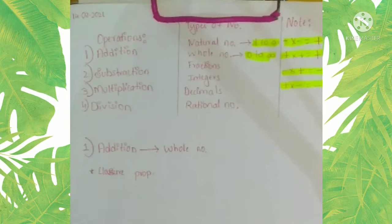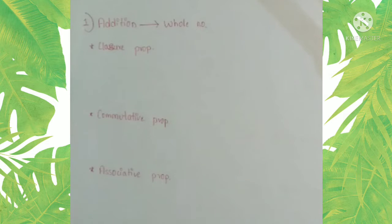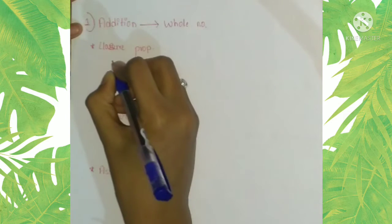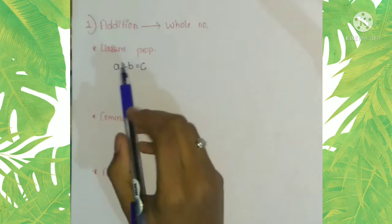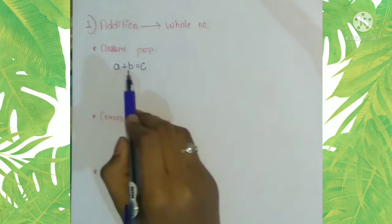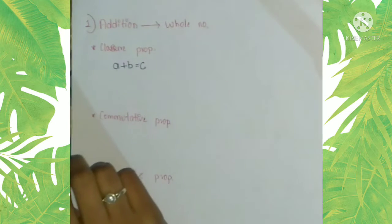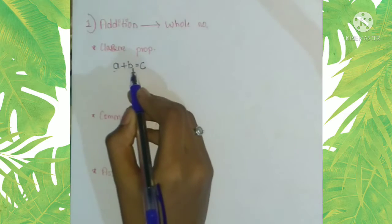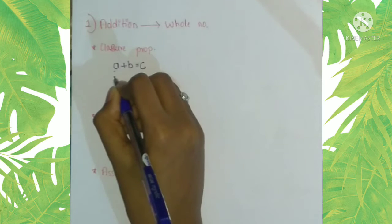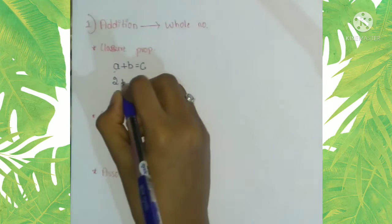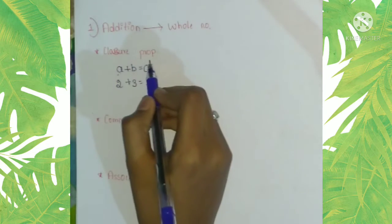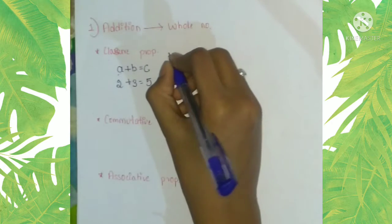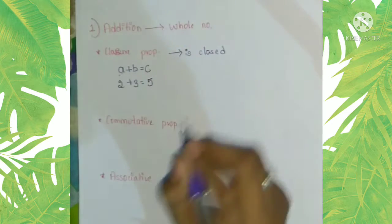Now we are going to discuss the properties of addition over whole numbers. First we have closure property. What is this? The formula of closure property is: a plus b equals c. Instead of a I'm going to take two, and instead of b I'm going to take three, so we get five. Five is a whole number, so closure property is closed under addition on whole numbers.